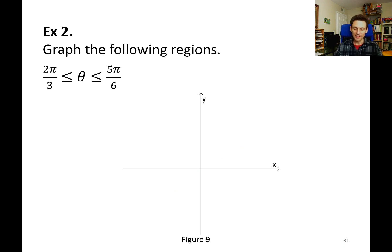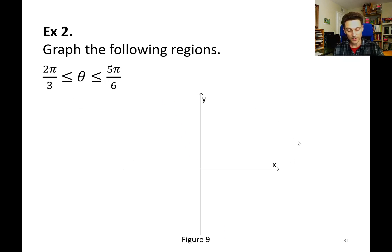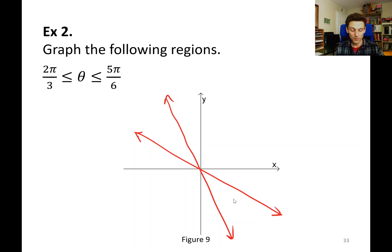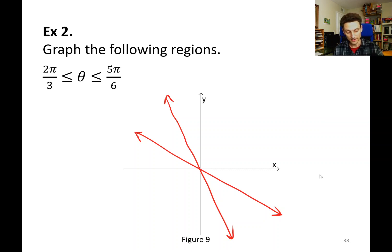What about theta between 2 pi over 3 and 5 pi over 6? The boundaries are the lines theta equals 2 pi over 3 and theta equals 5 pi over 6. Draw those two lines in both directions. If r can be anything, that fills in all the lines between those two theta values — so we shade the region in both directions between the 2 pi over 3 and 5 pi over 6 lines. Thank you for watching this video, and see you in the next one.